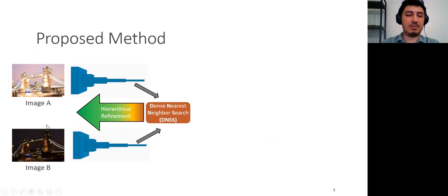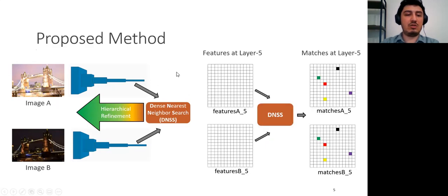Given an image pair A and B, we first perform deep feature extraction for both images using a pre-trained VGG-19 network. Then we continue with dense nearest neighbor search and hierarchical refinement steps. We utilize the DNSS block, which is basically mutual nearest neighbor search with ratio test, to find the matches between two feature maps at the lowest resolution. These are our initial matches.